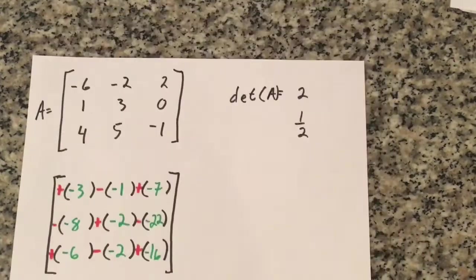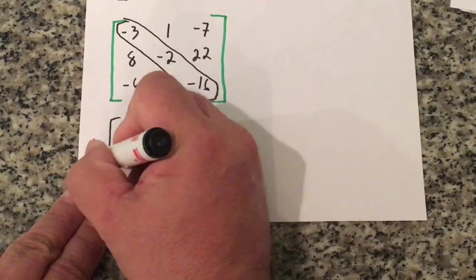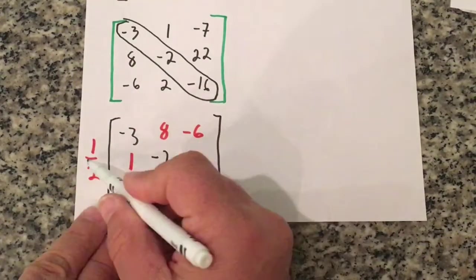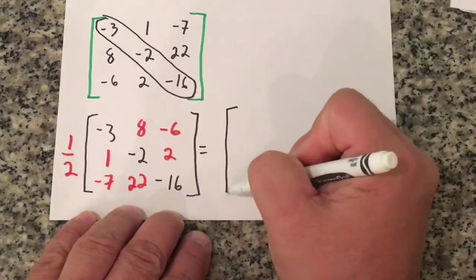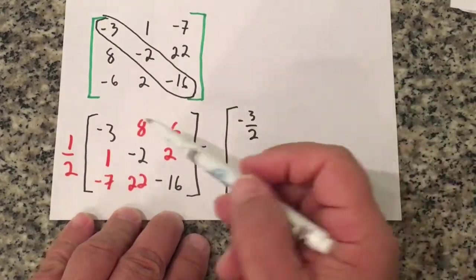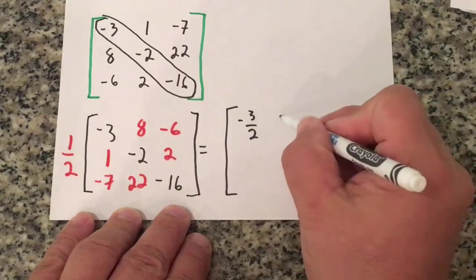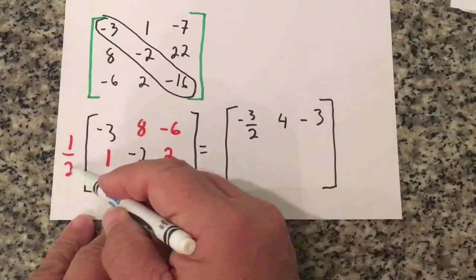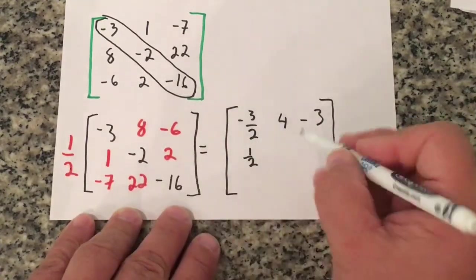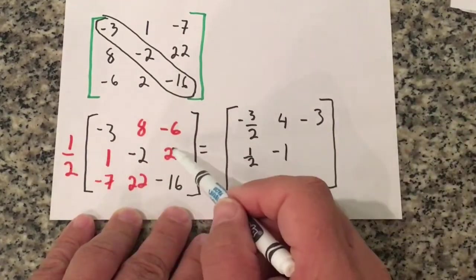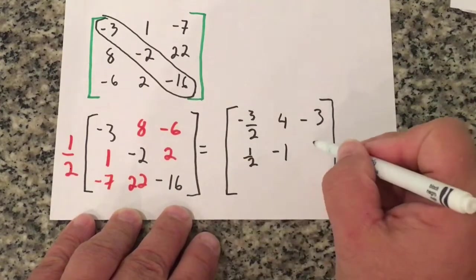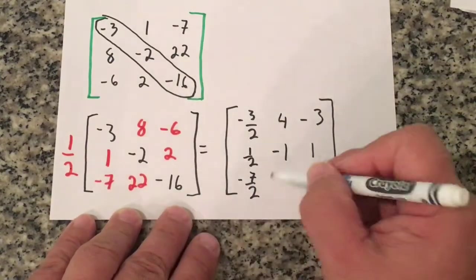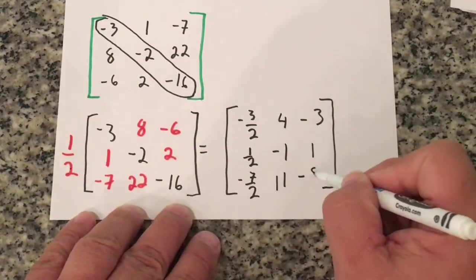I have to multiply this whole thing by 1 over the original determinant — so I multiply by one half. One half times negative 3 is negative 3 halves. One half of 8 is 4. One half of negative 6 is negative 3. One half of 1 is one half. One half of negative 2 is negative 1. One half of 2 is 1. One half of negative 7 is negative 7 halves. One half of 22 is 11. And one half of negative 16 is negative 8.